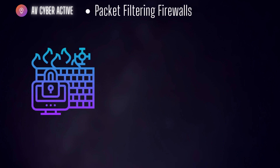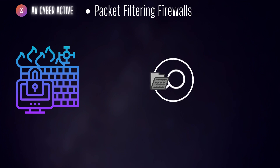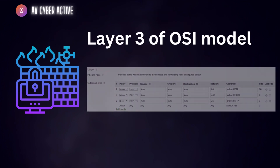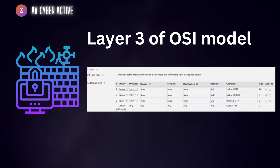Beginning with the first one — packet filtering firewalls. Packet filtering firewalls are the most basic type of firewalls and they operate at the network layer, which is layer three of the OSI model. These firewalls examine individual packets of data and make decisions based on pre-determined rules, using criteria such as source and destination IP addresses, port numbers, and protocol types to determine whether to allow or block packets.